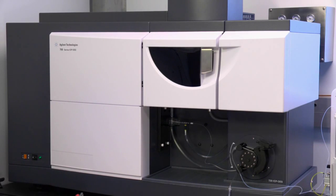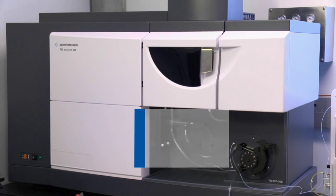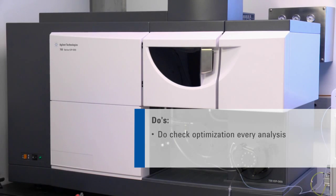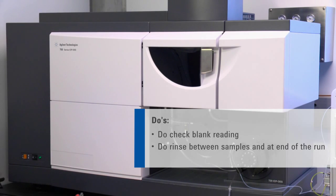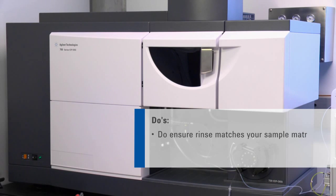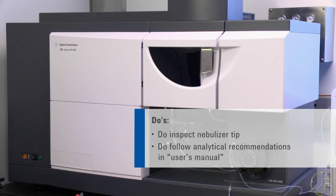There are some general do's and don'ts in using an ICP-OES. For example, verify performance before analysis by checking nebulizer uptake, parasitic pump tubing, and the blank reading to ensure there is no carryover from a previous analysis. Be sure to rinse between samples and at the end of the run. The rinse solution should match the sample matrix. Clean the torch and nebulizer regularly and inspect the condition of the nebulizer tip. Finally, follow analytical recommendations in your user's manual.